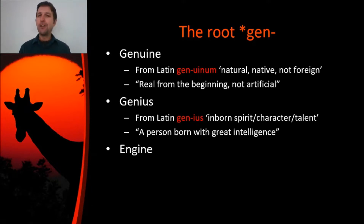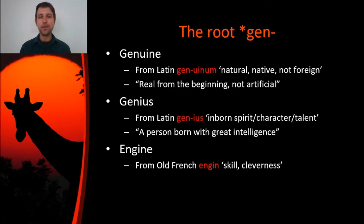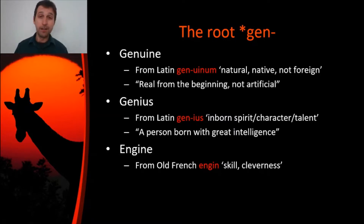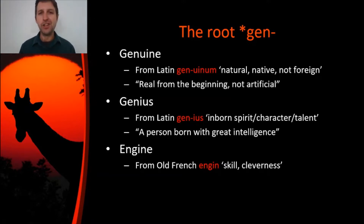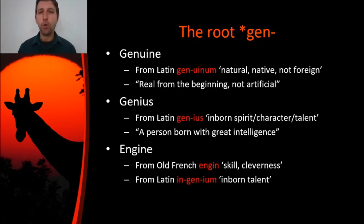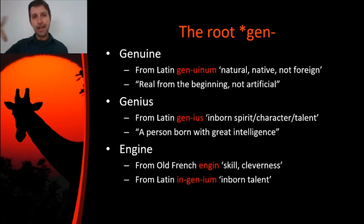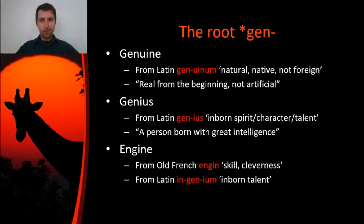What about engine? You may never have thought about this connection — the Gen root is kind of hiding in the word engine. English got it from Old French engine, which originally just meant skill or cleverness. It didn't necessarily mean an engine as we think of it today. That comes from Latin inganium — you can see the connection once you look at it. In Latin, inganium meant inborn talent: the in means in, the Gen means born. So inganium is something that is born inside of you. In case you're wondering, our word ingenious, like an ingenious plan, comes from this as well. So ingenious and genius are totally connected, but they're also connected to this word engine.